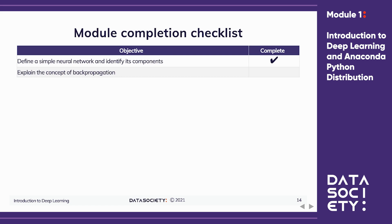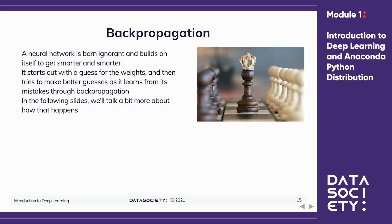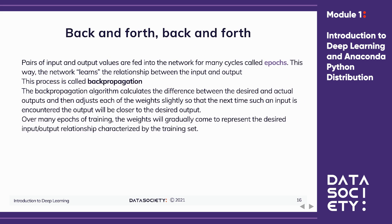Let's discuss the next section on backpropagation. A neural network is born ignorant and builds on itself to get smarter and smarter. It starts out with a guess for the weights and then tries to make better guesses as it learns from its mistakes through backpropagation. Pairs of input and output values are fed into the network for many cycles called epochs, and the network learns the relationship between the input and output. The backpropagation algorithm calculates the difference between the desired and actual outputs, then adjusts each of the weights slightly so that the next time such an input is encountered, the output will be closer to the desired output. Over many epochs of training, the weights will gradually come to represent the desired input-output relationship characterized by the training set.